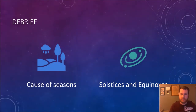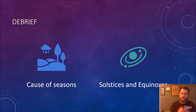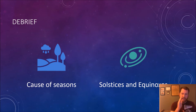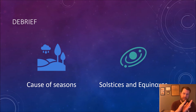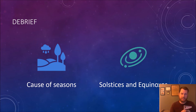What causes the seasons? It's the tilt of the Earth. It doesn't really have much to do with the distance from the sun — in January, Earth is actually closest to the sun, yet it's the coldest for the Northern Hemisphere; in July, when it's warmest, we're farthest from the sun. So it's that 23.5-degree tilt as Earth revolves around the sun that causes our seasons.